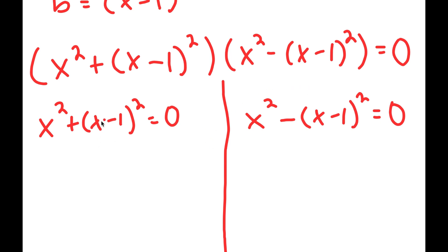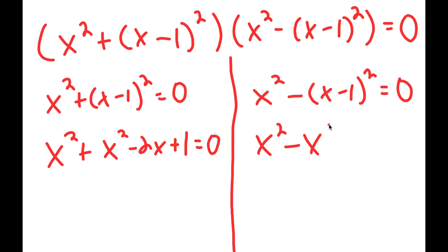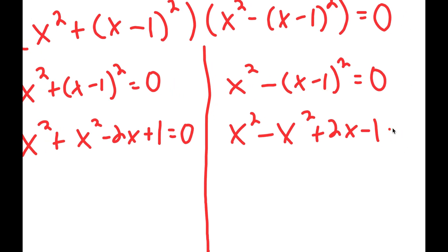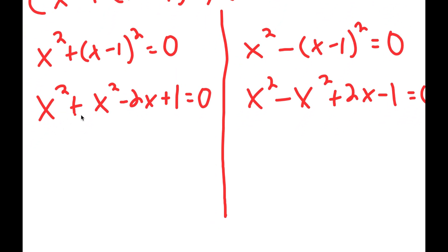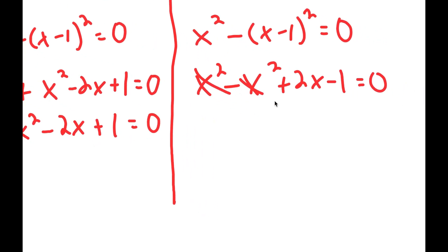Now, x minus 1 squared expands to x squared minus 2x plus 1. So the first equation becomes x squared plus x squared minus 2x plus 1 equals 0, and the second becomes x squared minus x squared plus 2x minus 1 equals 0. For the first equation, the x squared terms combine to give 2x squared minus 2x plus 1 equals 0. For the second, the x squared terms cancel, leaving 2x minus 1 equals 0.